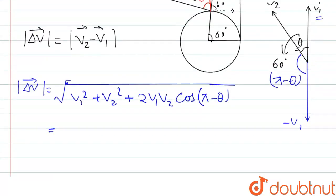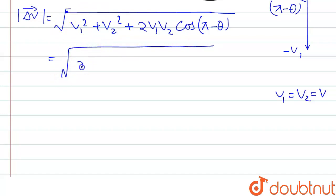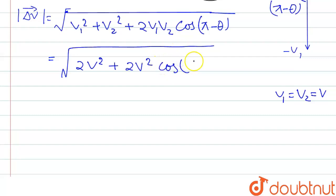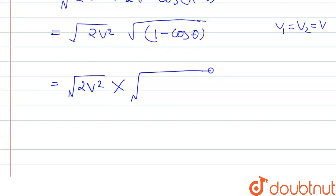Here we know that the speed is constant, so V1 equals V2. If we write V1 equal to V2 equal to V, then the expression becomes 2V. Using the parallelogram law: Δv = √(V1² + V2² + 2·V1·V2·cos(π − θ)), which simplifies to √(2V² + 2V²·cos(π − θ)), that is 2V².